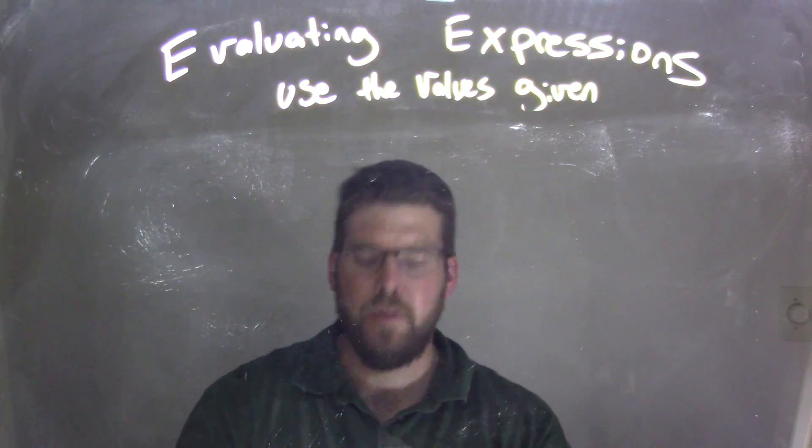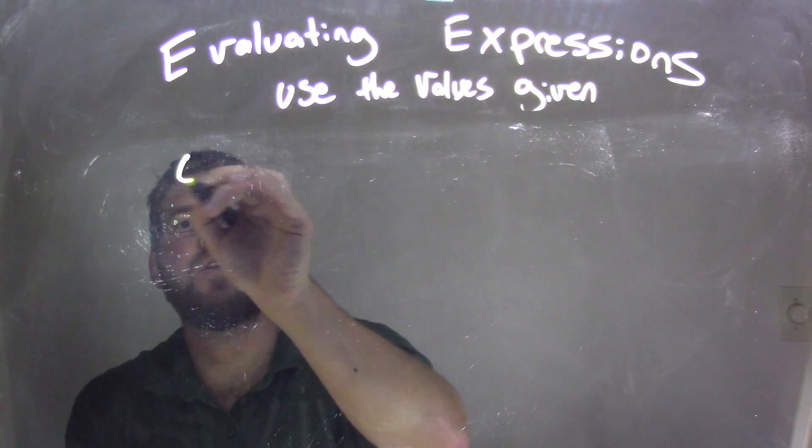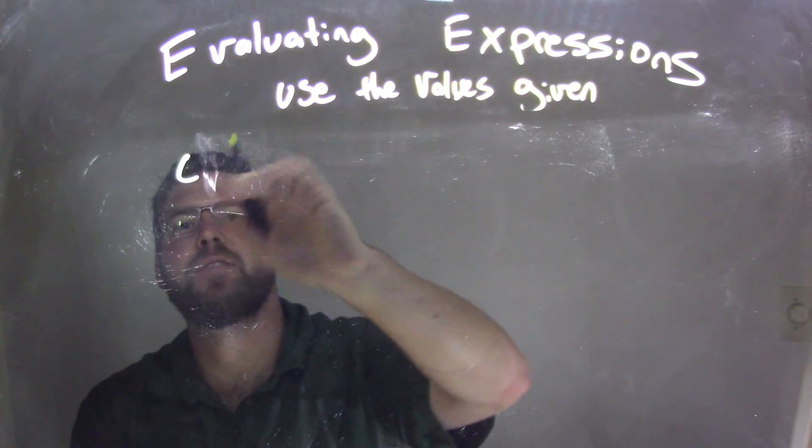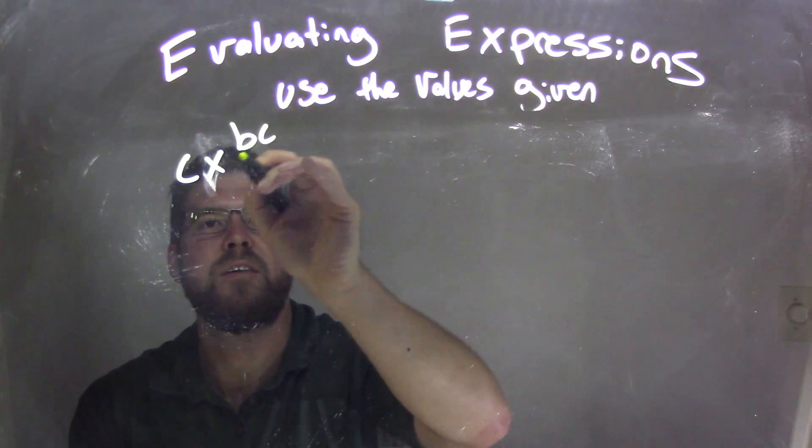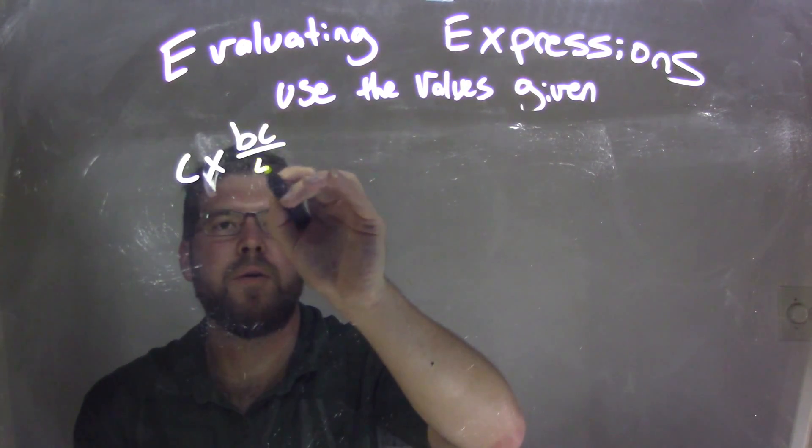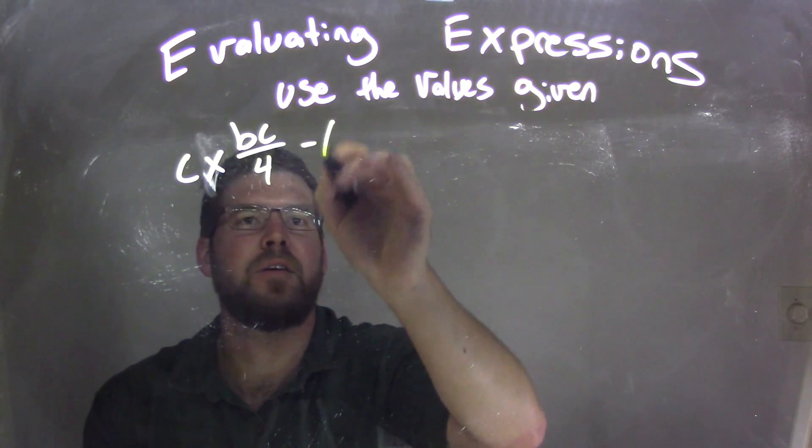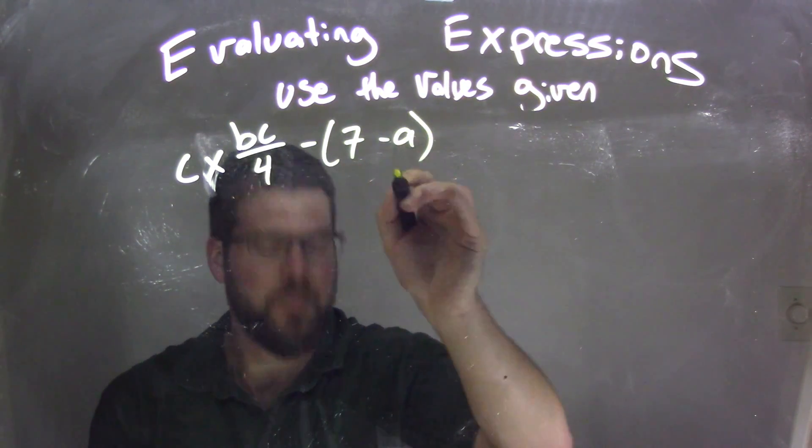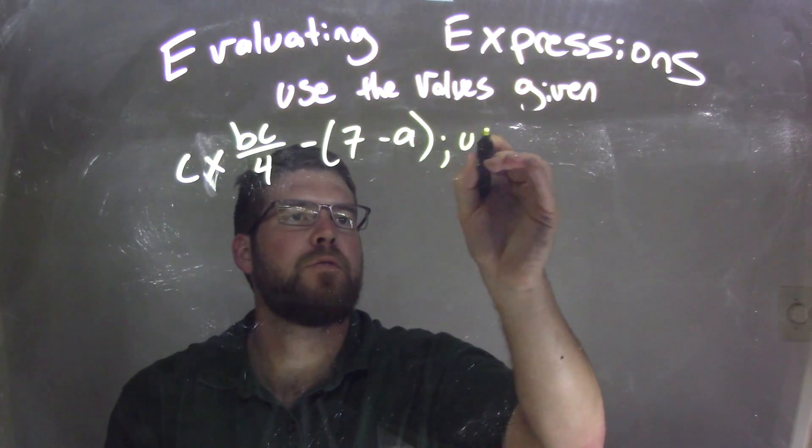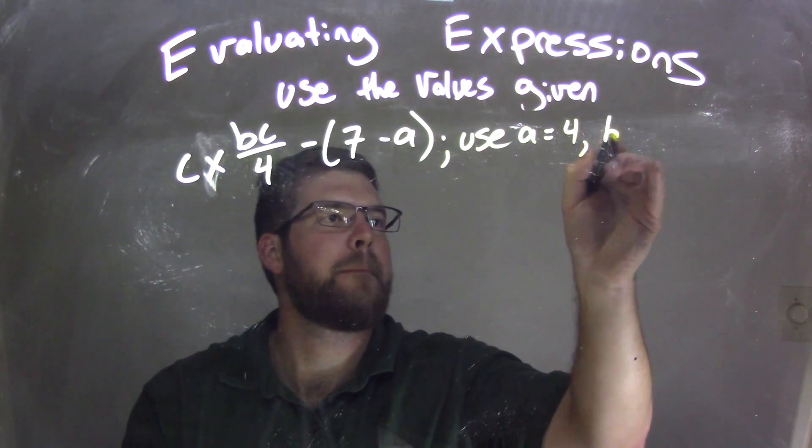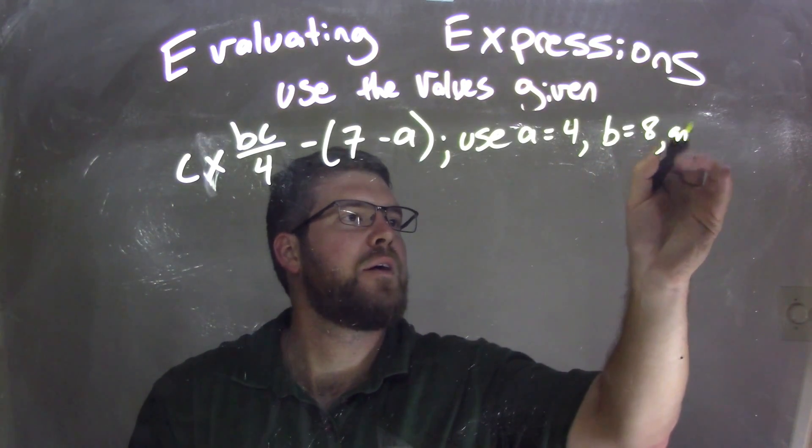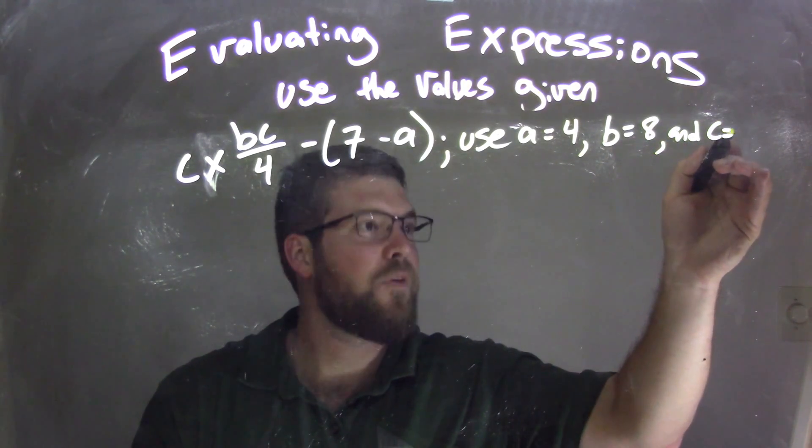So if I was given this expression, c times bc over 4 minus 7 minus a, and I'm going to use a equal to 4, b equal to 8, and c equal to 5.